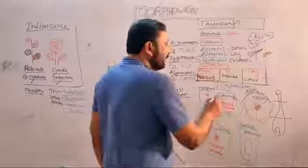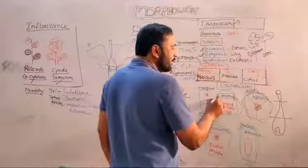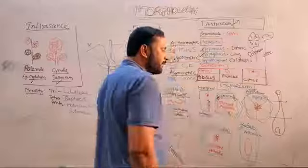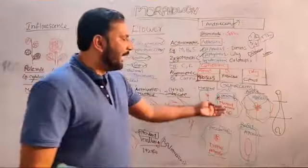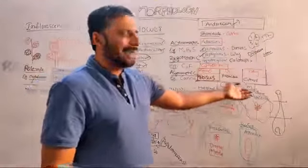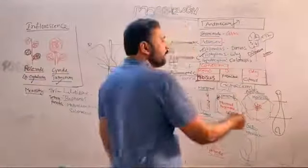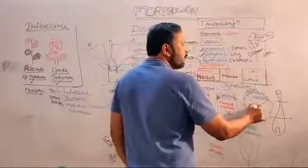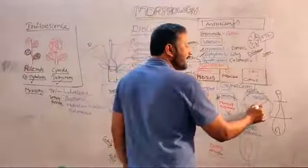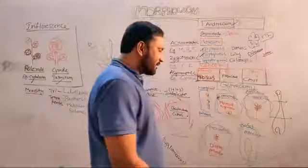Parietal placentation — where the margins of the carpel are fused, placenta develops there — example mustard and Argemone. Axile placentation — ovules are born on the central axis — example Hibiscus.